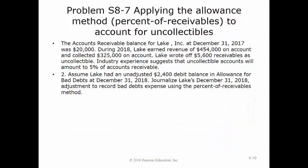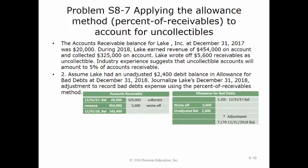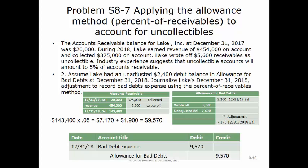In Part 2 of the problem, we assume that Lake had an unadjusted $2,400 debit balance in the allowance for bad debts at December 31, 2018. The target balance in allowance for bad debts is still $7,170. However, since we had a $2,400 debit balance, we add that amount to our target balance of $7,170 to get $9,570 for our adjusting entry for bad debts expense and allowance for bad debts. After posting the $9,570 credit entry to the allowance for bad debts, we get our target balance of $7,170 in the allowance account.